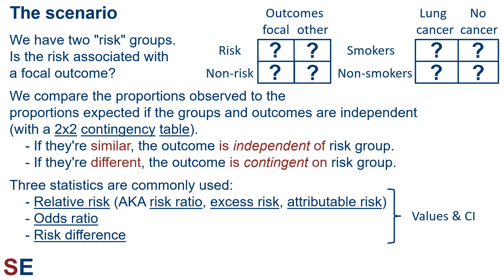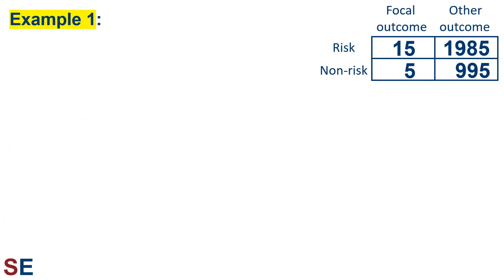This channel has another video that talks more about what these values represent, but in this video we'll look at two numerical examples and do all the calculations. In our first example, there are twice as many total observations in the risk group — 2,000 vs. 1,000 — but three times as many that have the focal outcome, 15 vs. 5. If the risk had no effect, we would expect 10 observations in the risk-focal outcome combination. Instead, we see 15, an extra 50%, so it appears the effect of the risk is to increase the rate of the focal outcome by 50%.